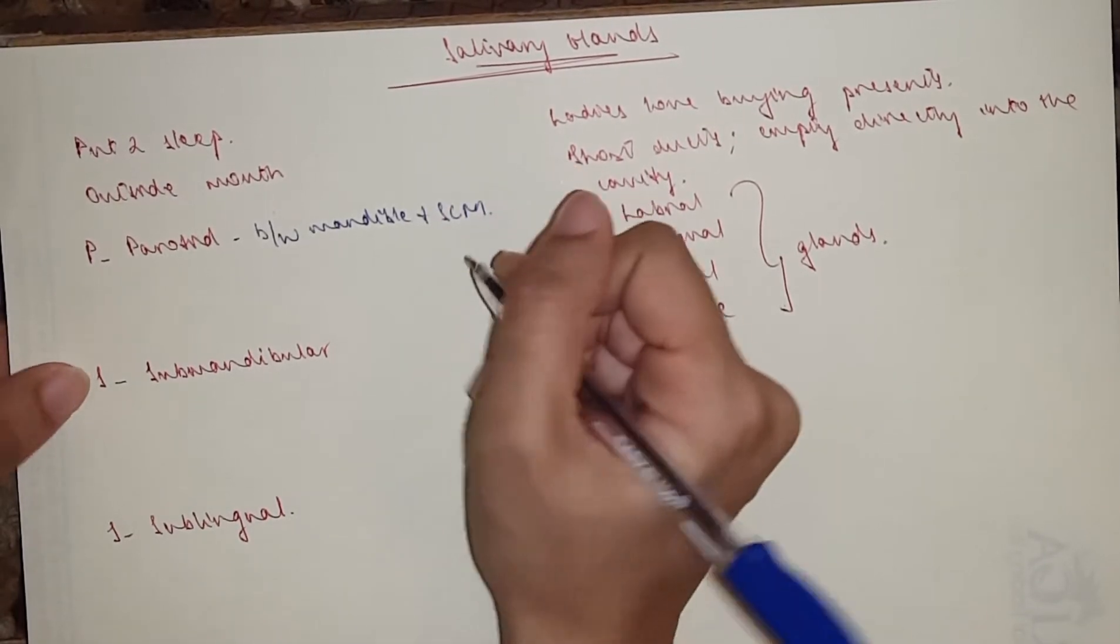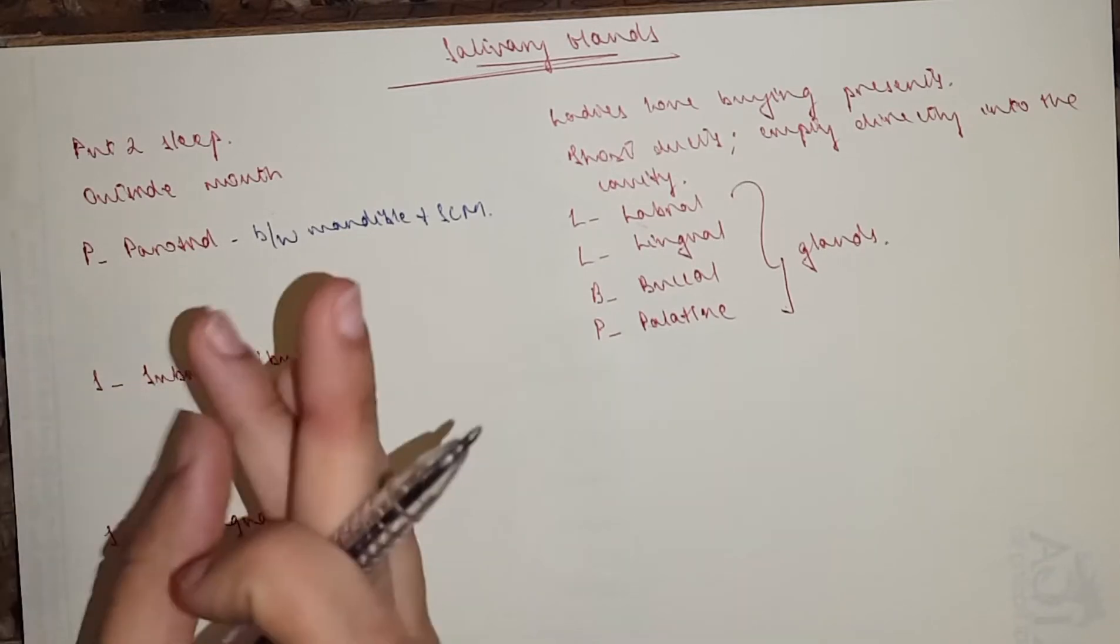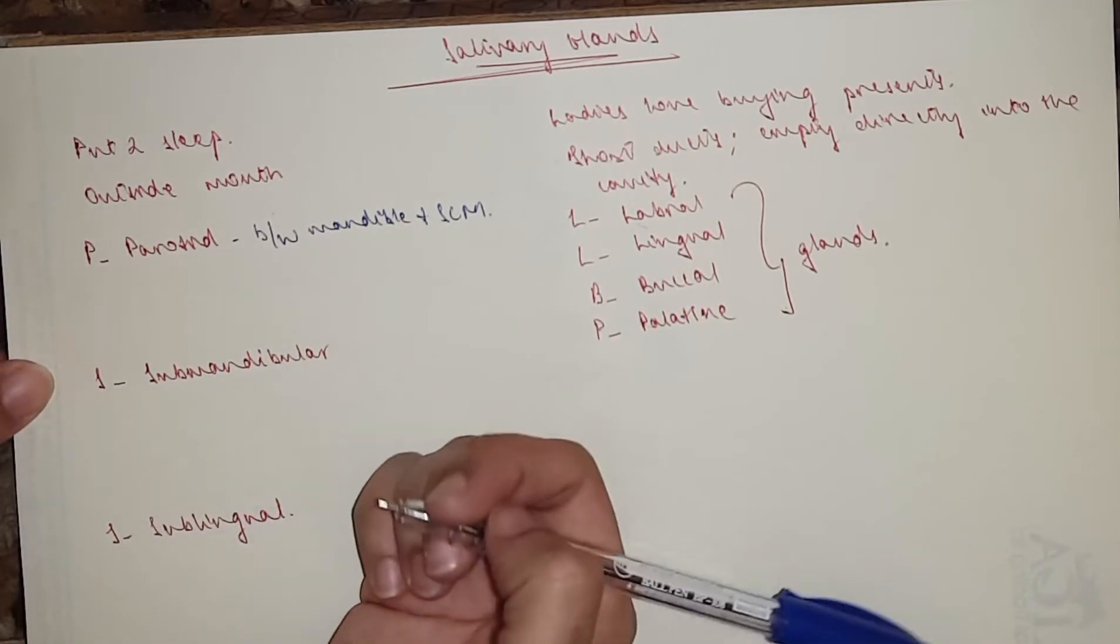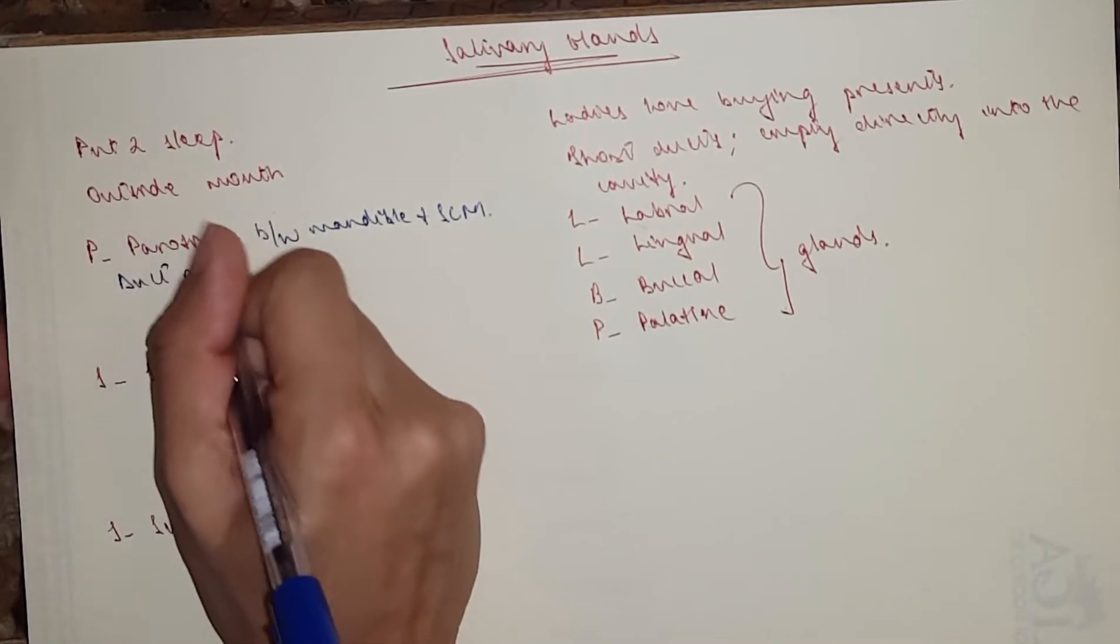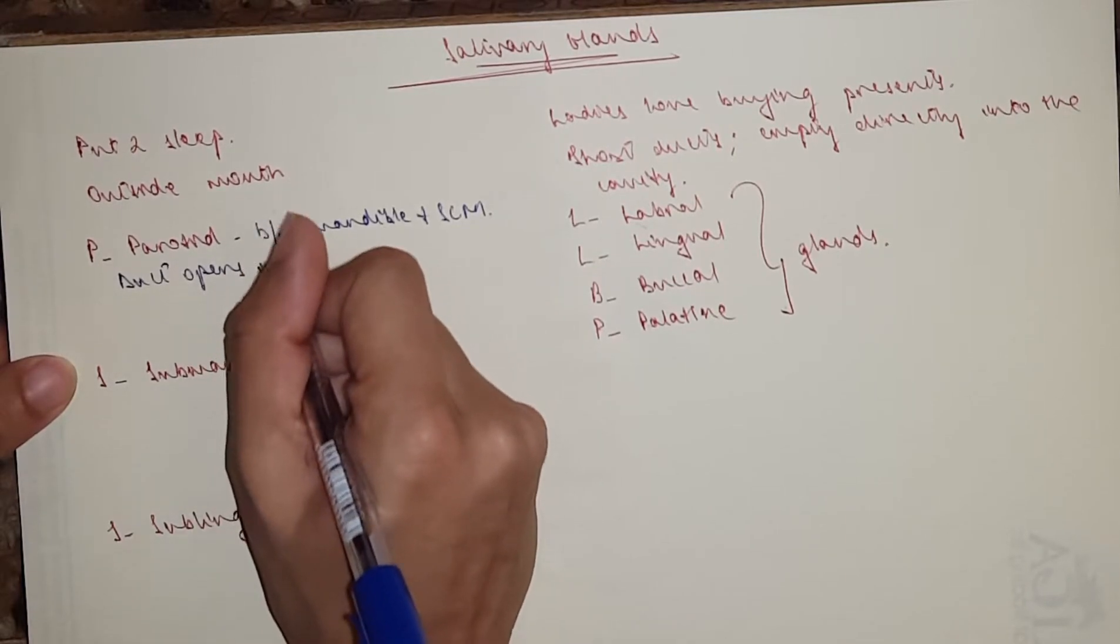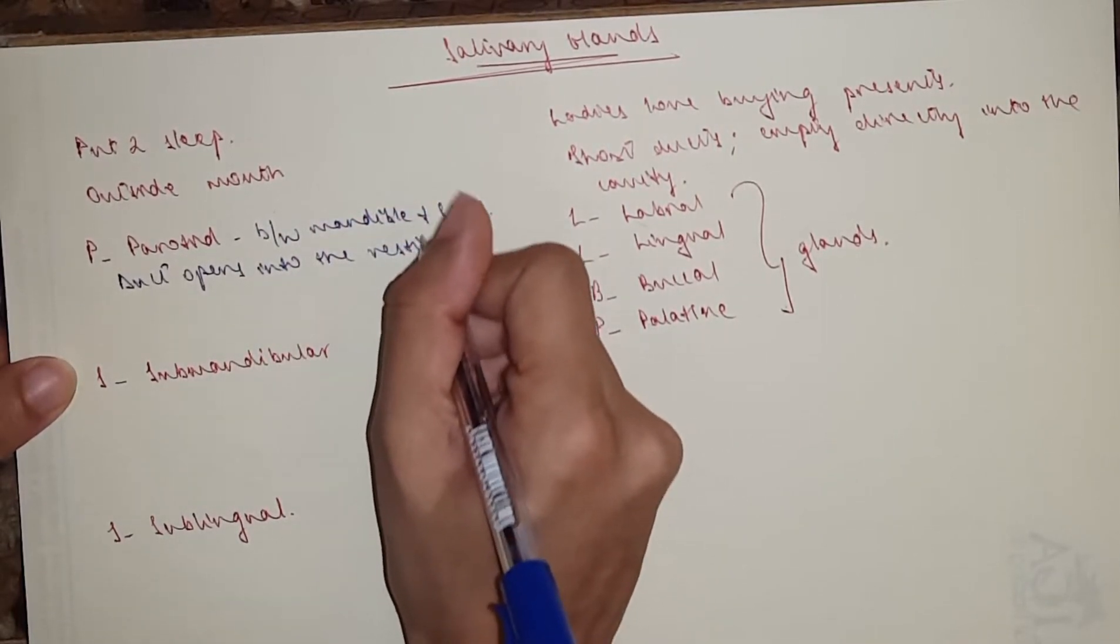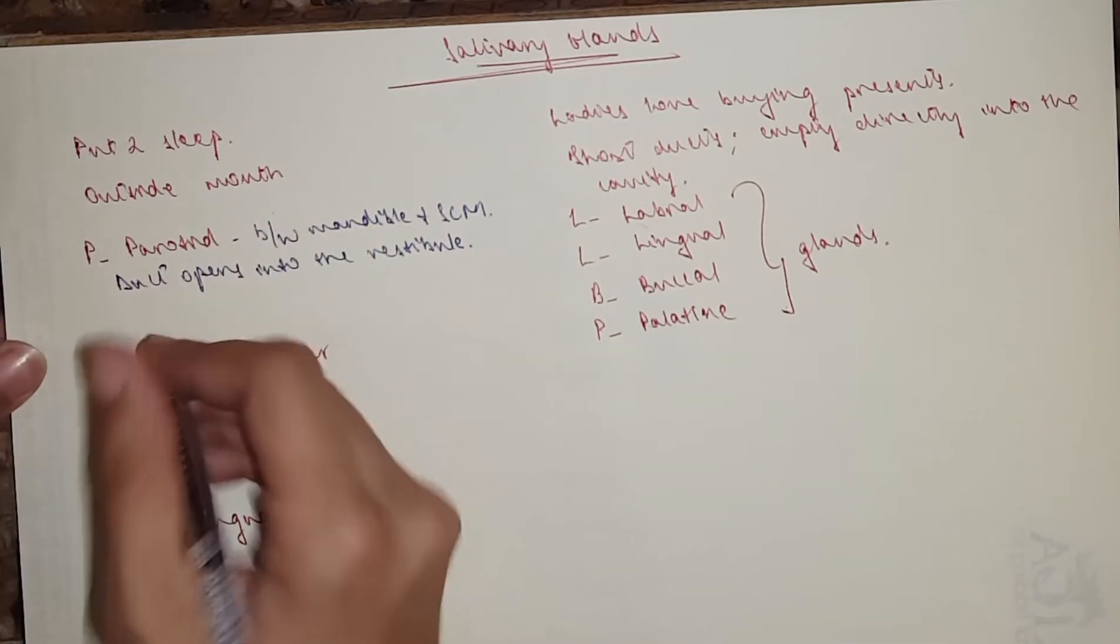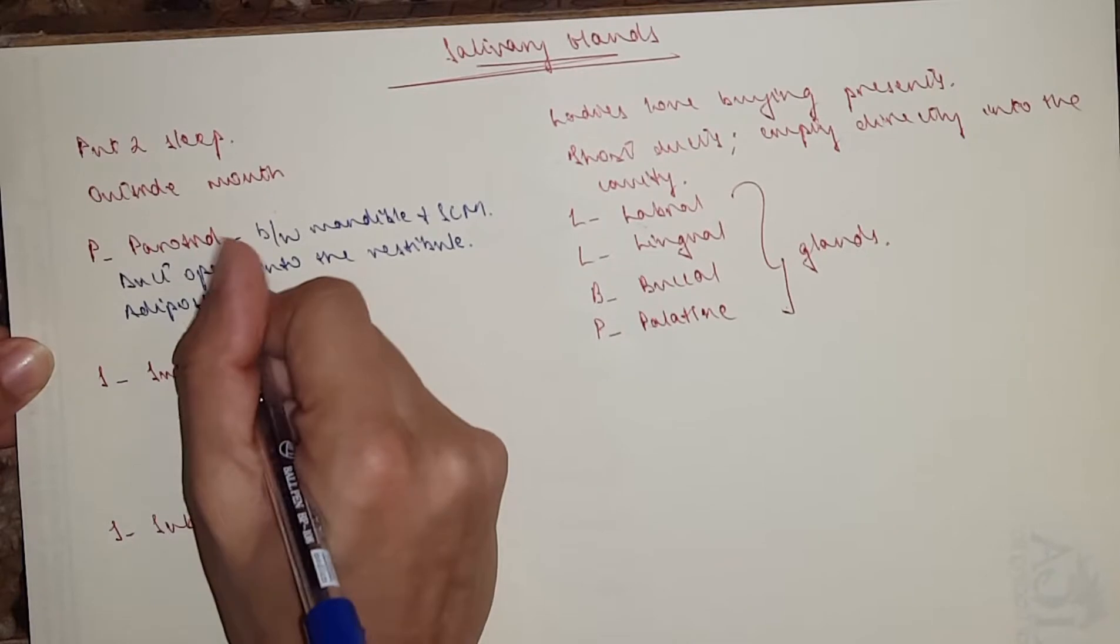The duct opens into the vestibule of the mouth, so it's opposite the upper second molar tooth. I'm just going to say the duct opens into the vestibule of the mouth. And it's got adipose tissue. This is one differentiating factor: the parotid gland has got a lot of adipose tissue surrounding it.